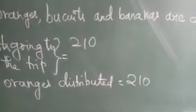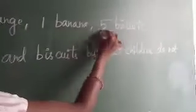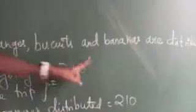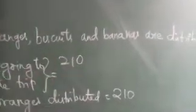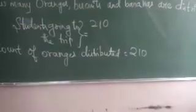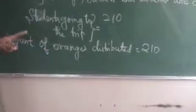How many biscuits are distributed? For one student, five biscuits are given. Total students going to the trip: 210. So one student gets five biscuits; for 210 students, how many biscuits are distributed? For this you have to multiply five and 210. So you use the multiplication operation.